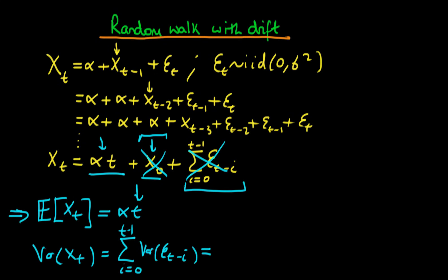and if we were to write out this sum in full we could see that there would actually be t variances so we just have t times the variance of et minus i which is t times sigma squared